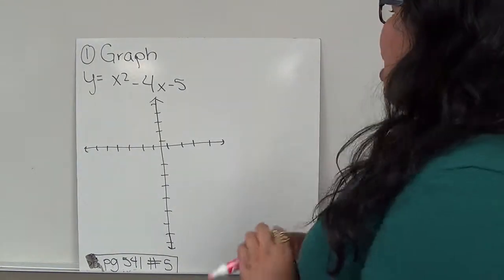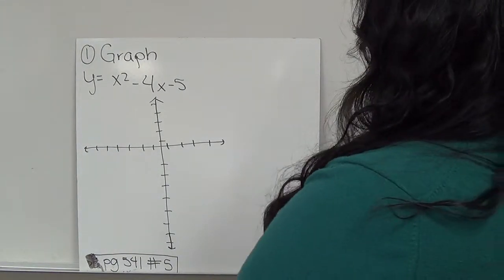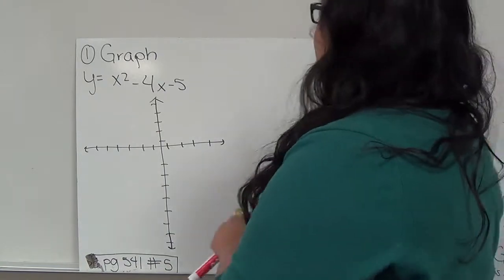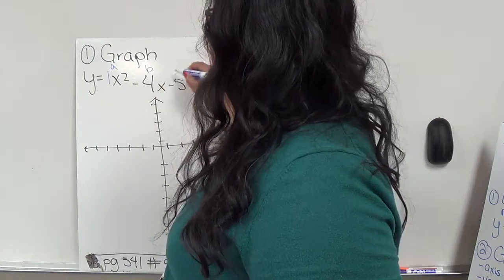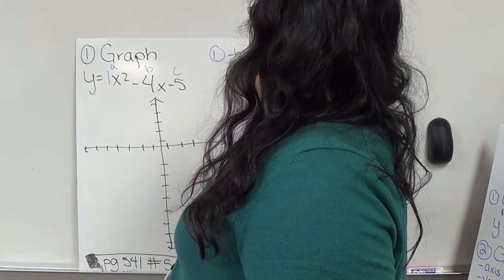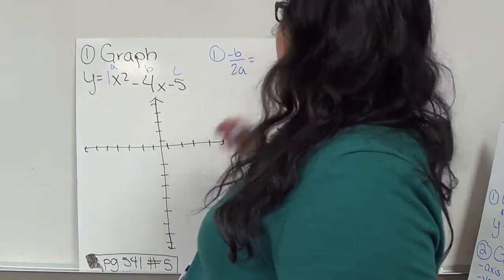All right, so we're going to graph this. My first step is to find the axis of symmetry. So this 1 is my A, negative 4 is my B, and this is my C. My axis of symmetry is negative B over 2A.